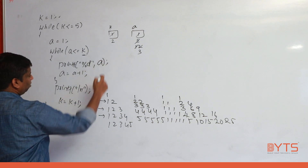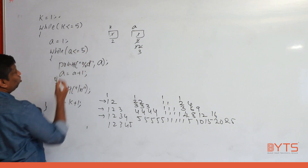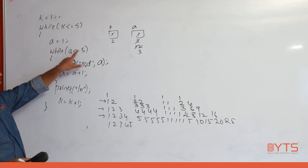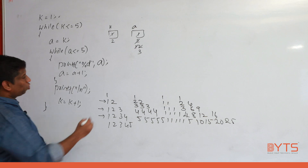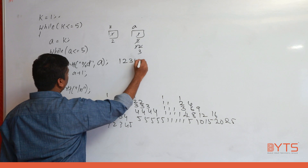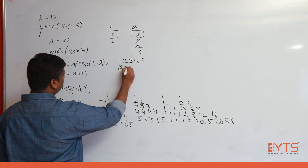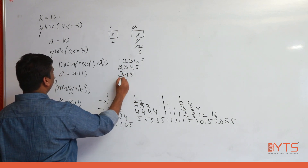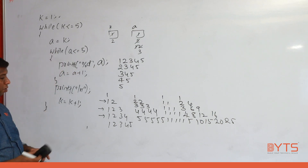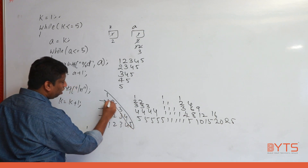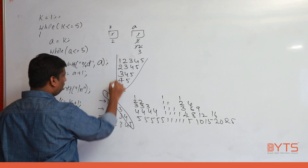Now another variation: keep the inner condition as a <= 5 (fixed end) but change the initial value of a to k instead of 1. First time k = 1: a starts at 1, prints 1, 2, 3, 4, 5. Second time k = 2: a starts at 2, prints 2, 3, 4, 5. Third time k = 3: prints 3, 4, 5. Fourth: 4, 5. Fifth: 5. So end value is fixed (5) but start value is variable (k).